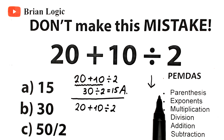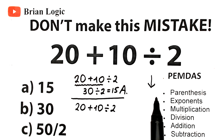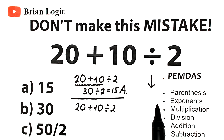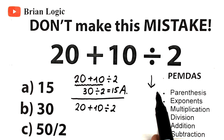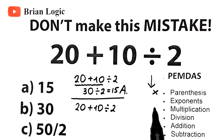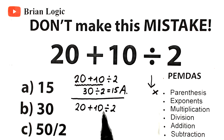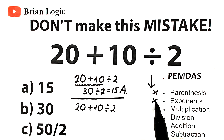The first step is parentheses — compute any operations within parentheses first. If there are multiple parentheses, start your calculations from the inside out. Where do we have parentheses? I don't see any parentheses, so we skip this part. The next step is exponents — calculate any exponents, such as squares or cubes. I don't see any of those either, so we skip this part as well. We don't have parentheses or exponents.